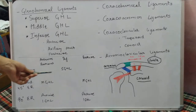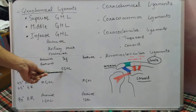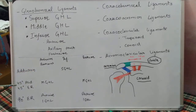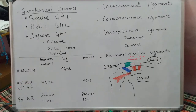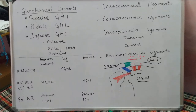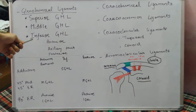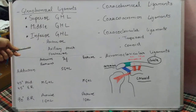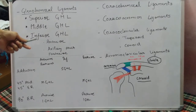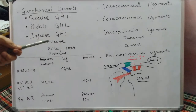In summary: in adduction it is the superior glenohumeral ligament acting; at 45 degrees abduction and external rotation it is the middle; and at 90 degrees it is the inferior glenohumeral ligament. The inferior ligament, because it takes a broader origin from the labrum, is the strongest one.